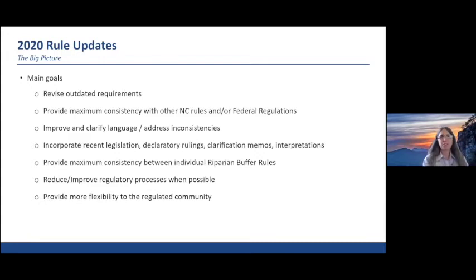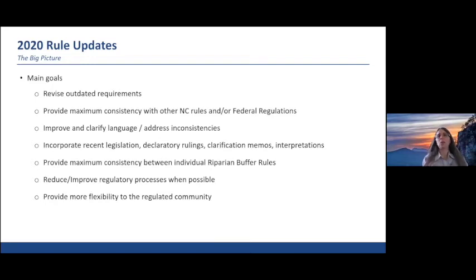We also wanted to provide consistency between as many of the rules as possible, including our stormwater and watershed protection rules and some federal regulations. We improved a lot of language, addressed inconsistencies, and incorporated legislation that had accumulated over the years telling us how to interpret or apply the rules. We also tried to improve the process by reducing regulatory burden and increasing flexibility for the community.